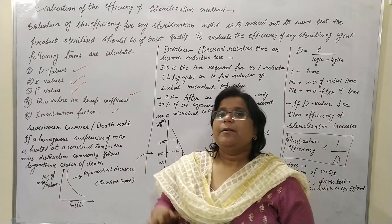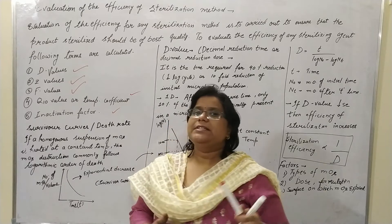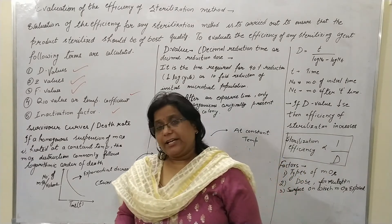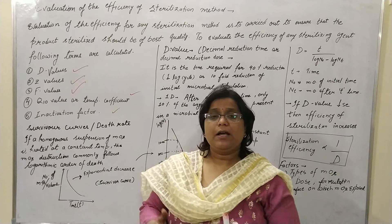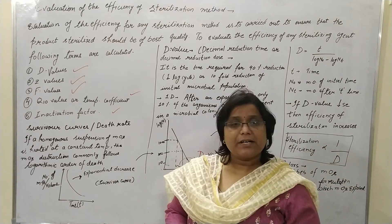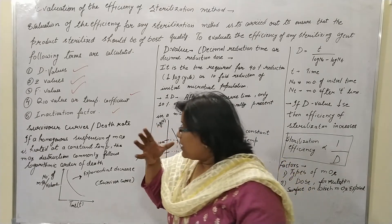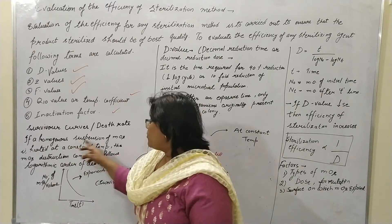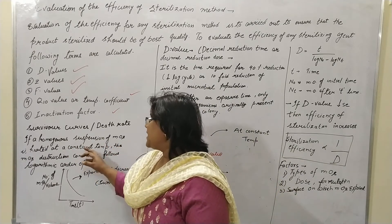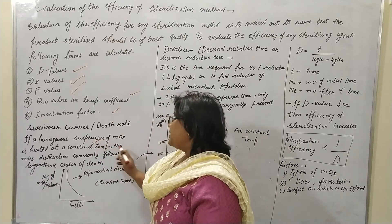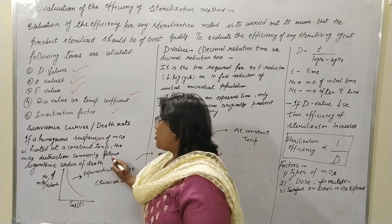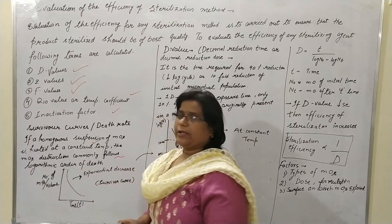So first, before starting the D value, we will discuss about the survivor curve or the death rate. What is the survivor curve? If a homogeneous suspension of microorganisms is heated at a constant temperature, the microorganism destruction commonly follows logarithmic order.